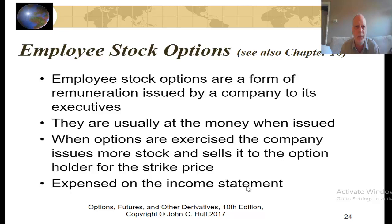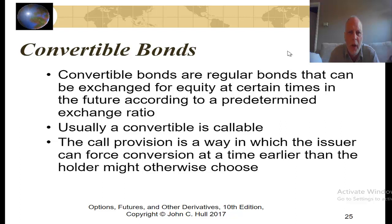Other option-type products include convertible bonds and convertible preferred stocks. Convertible bonds are regular bonds that can be exchanged for equity in the company at certain times in the future according to a predetermined exchange ratio, giving investors the advantages of bond interest plus participation in equity upside. Usually a convertible is callable — the call provision allows the issuer to force conversion earlier than the holder might otherwise choose. In the past, Warren Buffett has been a big fan of convertible preferred stock. Thank you for watching this video.